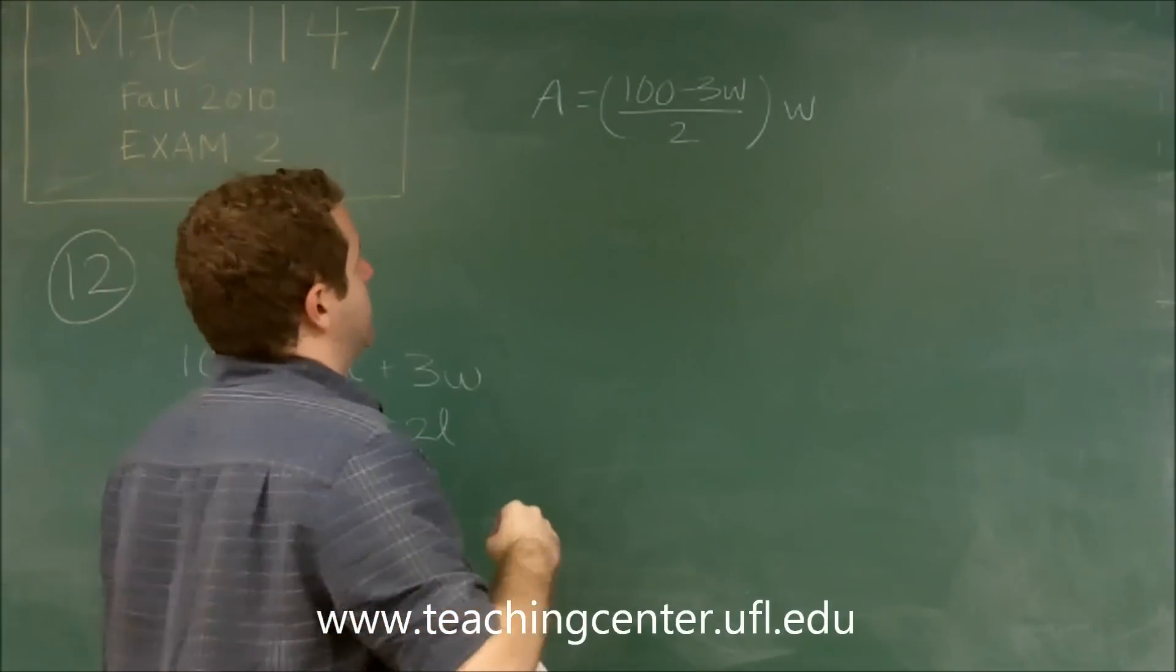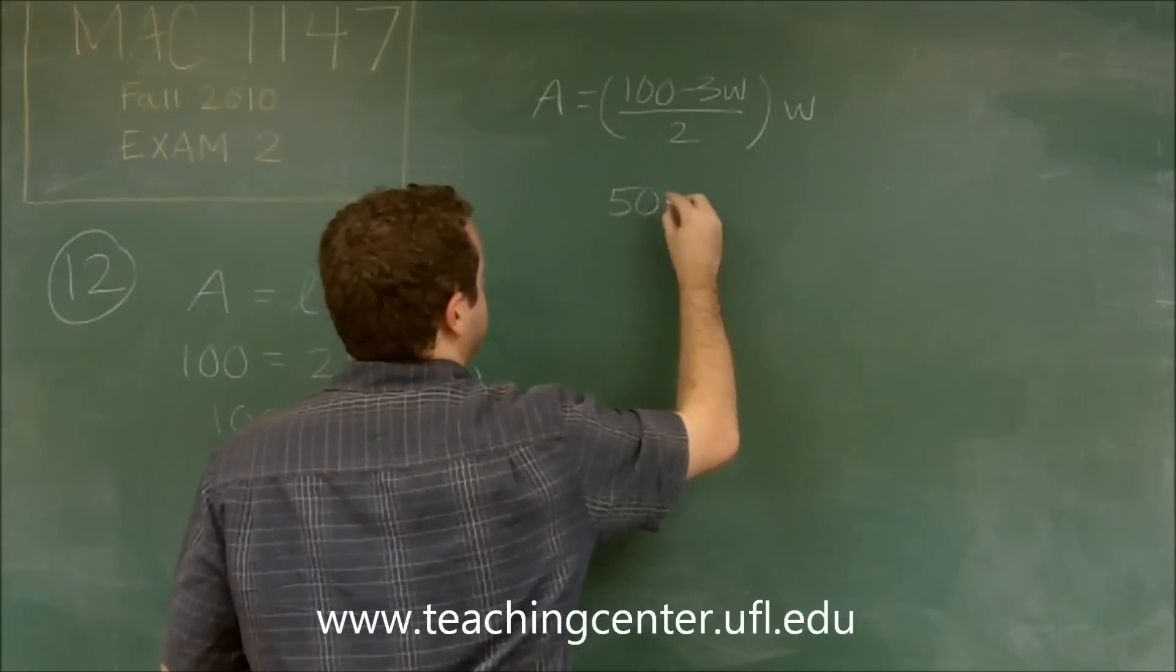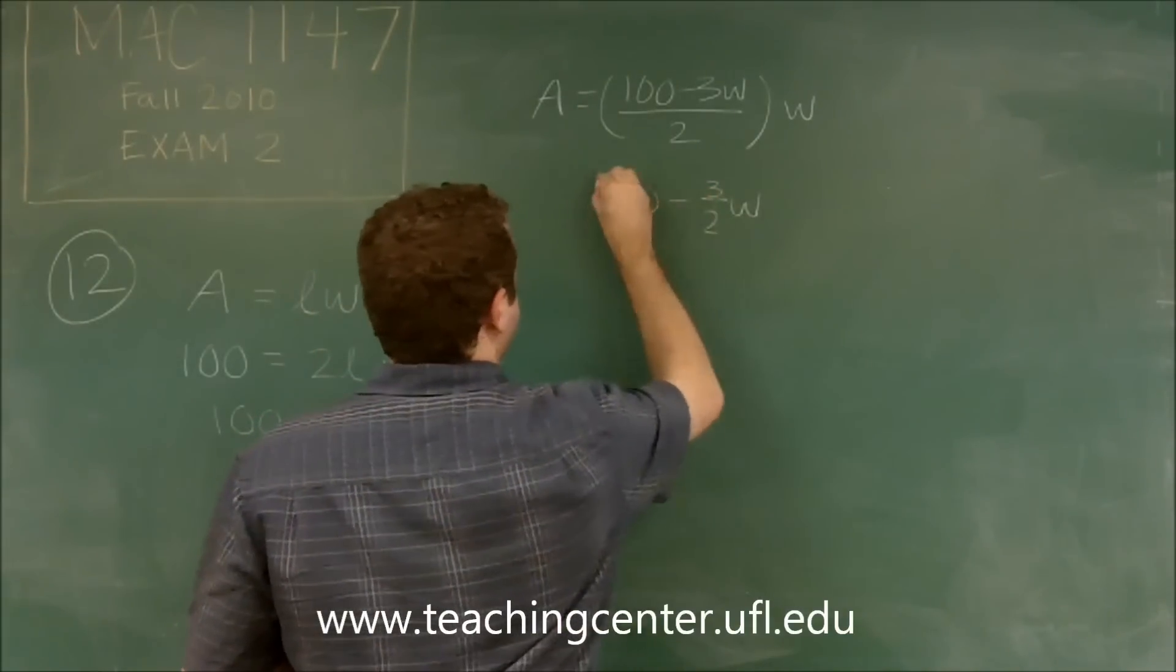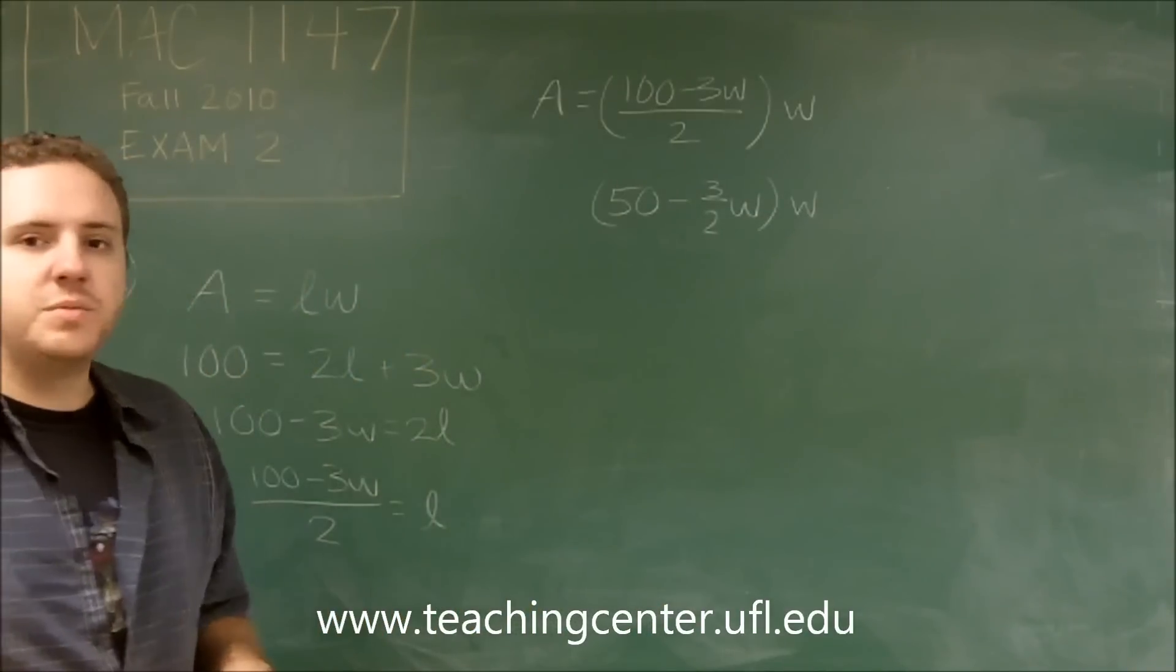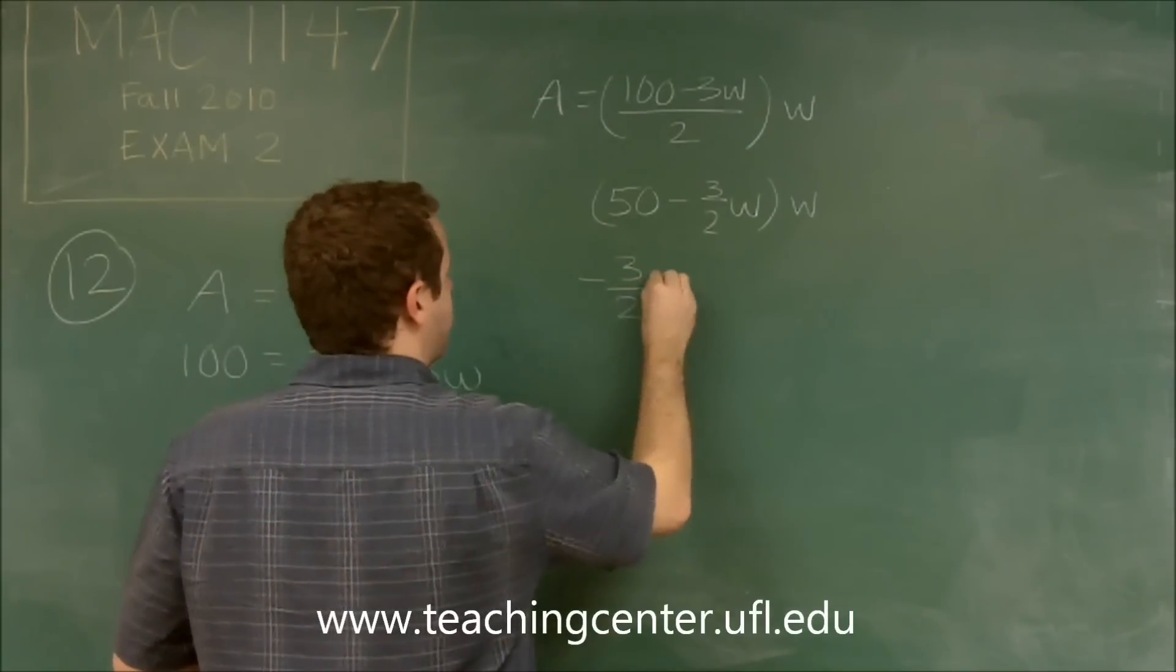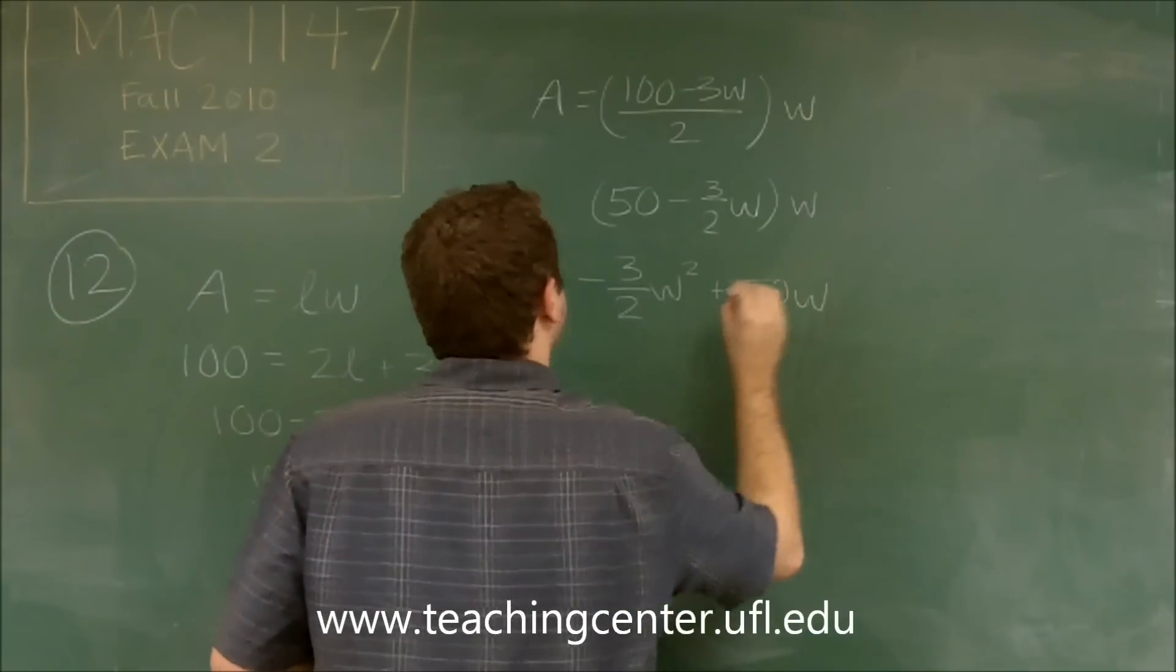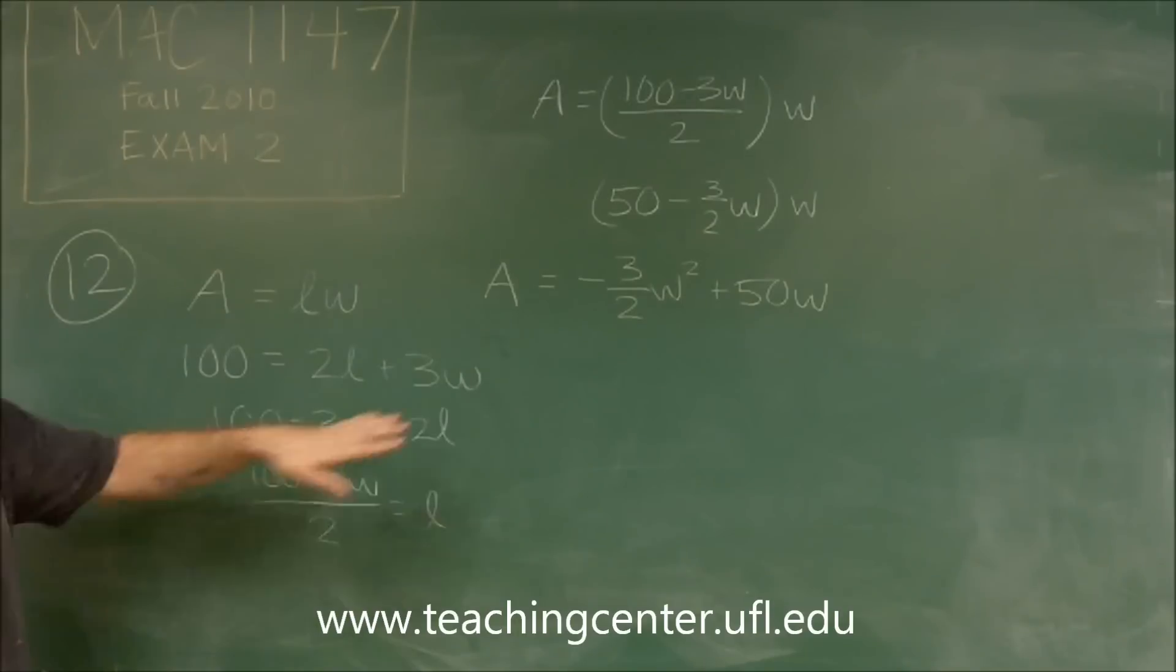What I'm going to do is, first of all, divide both of these by 2 so I don't have to keep writing it as one big fraction. 50 minus 3 halves W times W. And if you distribute that W and write it in the normal order, negative 3 halves W squared plus 50W. So this is our area equation.